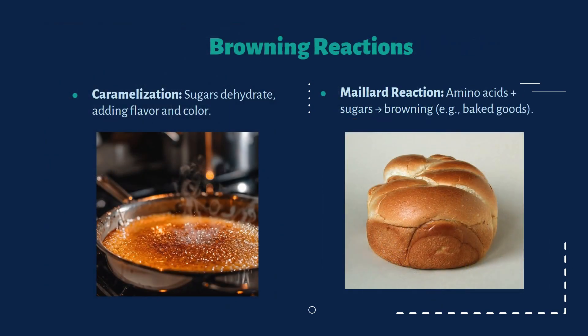Next is the browning reaction. Carbohydrates go through various browning reactions. First is caramelization — it happens when sugars break down under heat, creating that golden brown crust. Another important browning reaction is the Maillard reaction, which occurs between amino acids and sugars, giving bread and roasted meat their rich flavor.